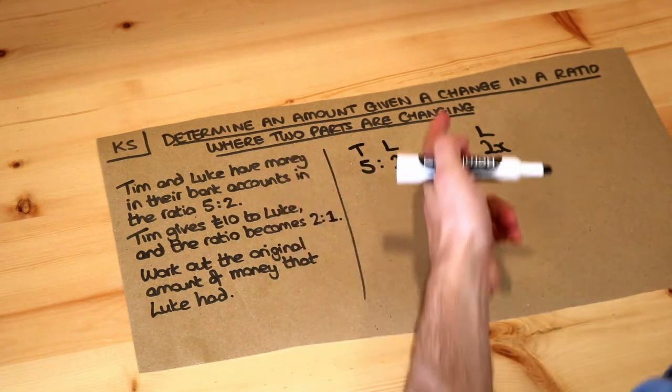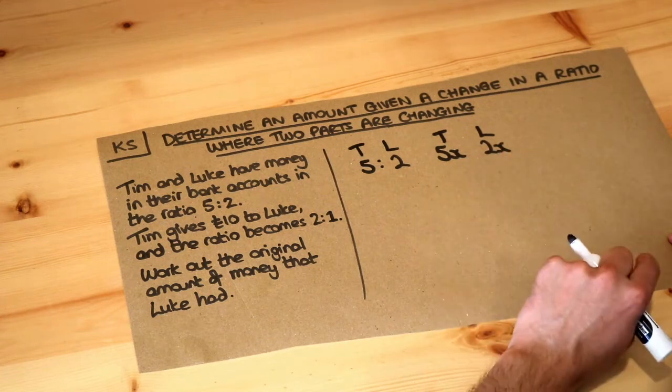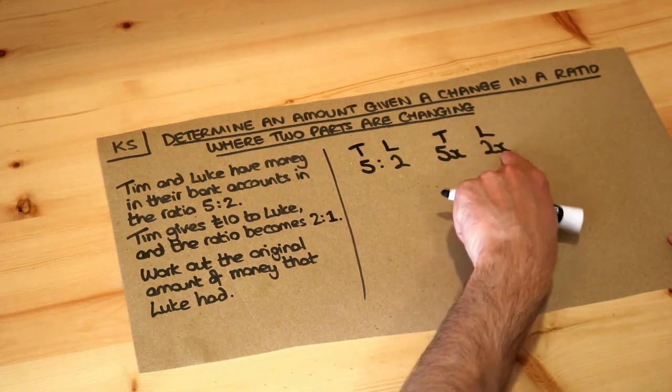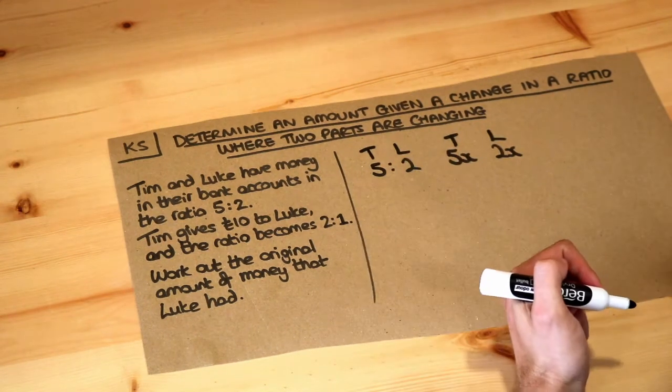Because if you think about it, if you just made x anything you like, let's just say x was equal to 1, then Tim and Luke would have 5 pounds and 2 pounds which is in the ratio 5 to 2.